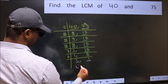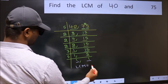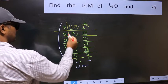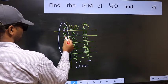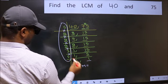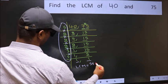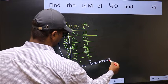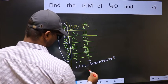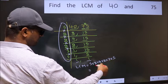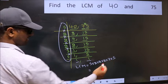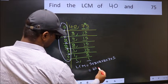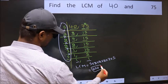So our LCM is the product of these numbers: 5 times 2 times 2 times 2 times 2 times 3 times 5. When we multiply these numbers, we get 600. So 600 is our LCM.